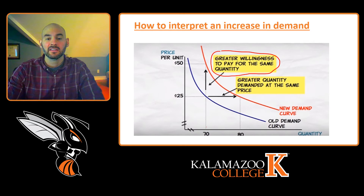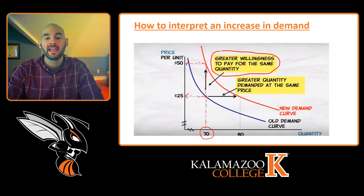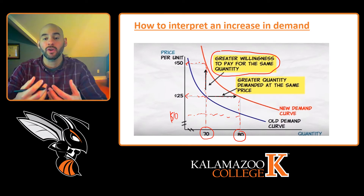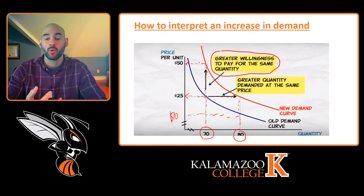Starting with a quantity of 70 units and going up, the willingness to pay under the original demand curve was $25 for that 70th unit. But with the new demand curve, the willingness to pay is $50 for that 70th unit. The same goes for every quantity demanded — for the 80th unit, the original willingness to pay was $10 and the new willingness to pay is $25. Both reflect a greater willingness to pay for the same quantity.